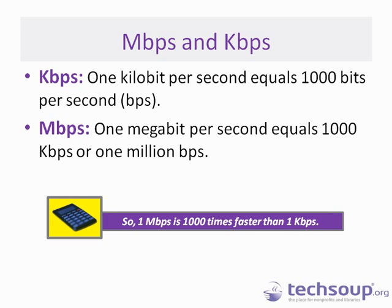When we talk about kilobits per second, that's 1,000 ones or zeros per second. A megabit is 1,000 kilobits. If you think about each letter you type being eight bits, or each pixel on a screen being eight bits, it adds up quickly. A thousand bits isn't a whole lot — a kilobit is equal to about one page of text.